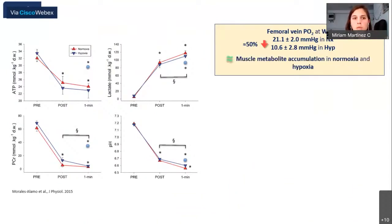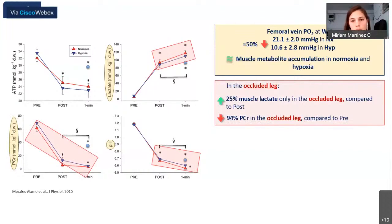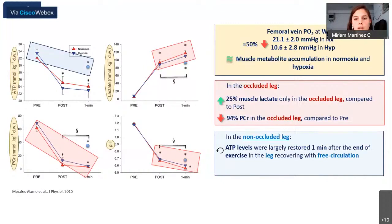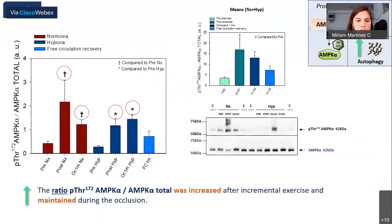For the hypoxia test, similar procedures were performed with a pre-exercise biopsy, a post-exercise biopsy, and a simultaneous bilateral biopsy — one from the occluded leg and one from the non-occluded leg. All biopsies were taken from the vastus lateralis, and molecular signals were analyzed by Western blot technique. Femoral vein PO2 at the end of exercise was lower in hypoxia than in normoxia, while muscle metabolite accumulation was similar in both conditions. In the occluded leg there was an increase in muscle lactate and a decrease in phosphocreatine.